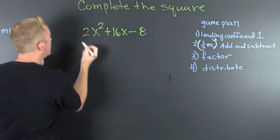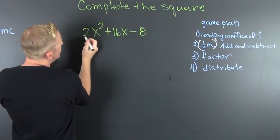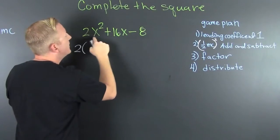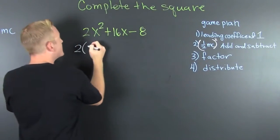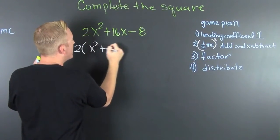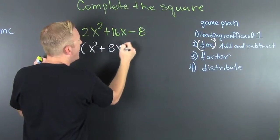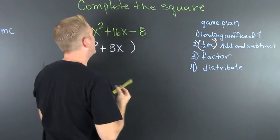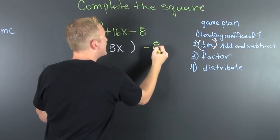And here we go. The leading coefficient needs to be one. So I factor out a two. From what? From my x group. So that's an x squared plus an 8x. And I'm going to leave that minus 8 out there.